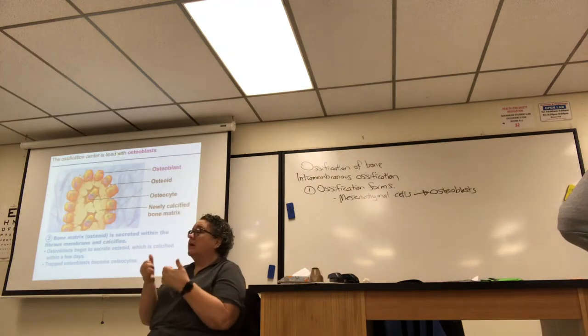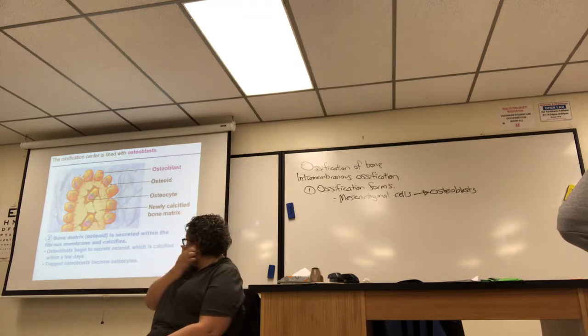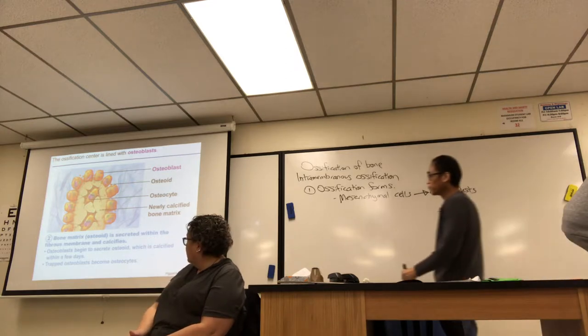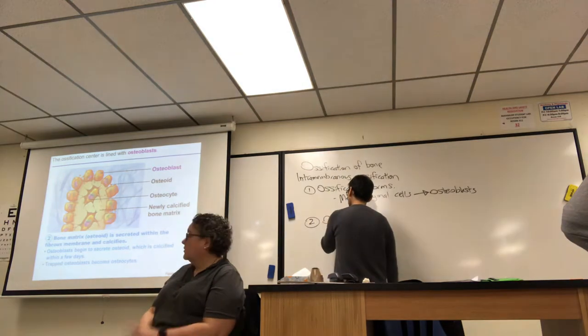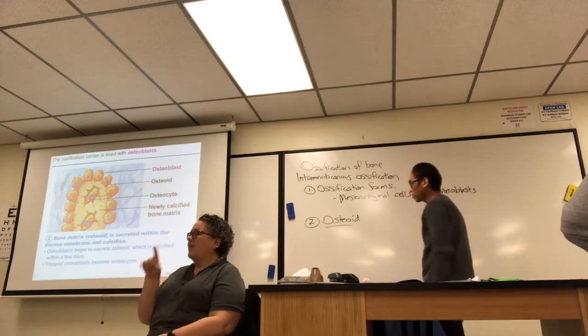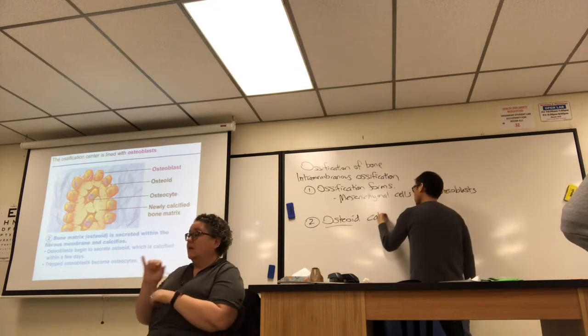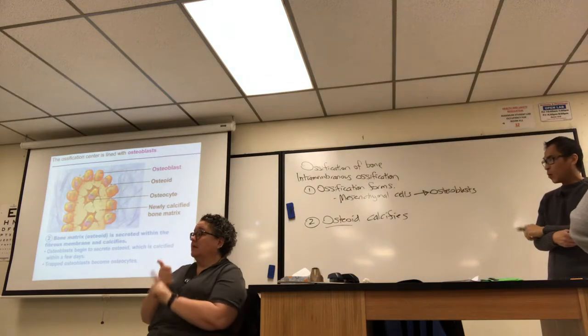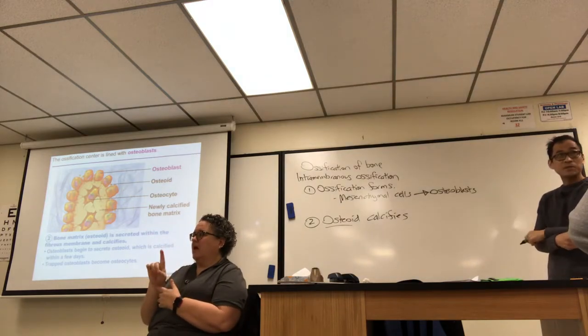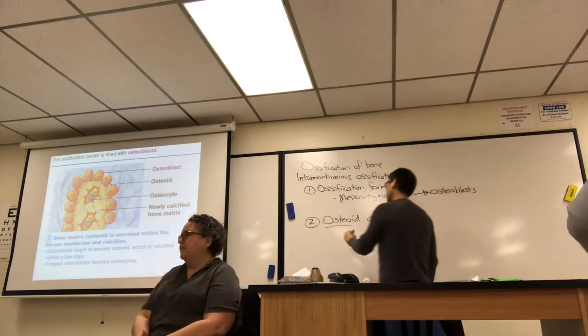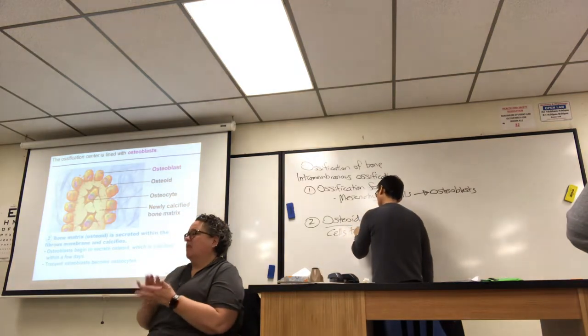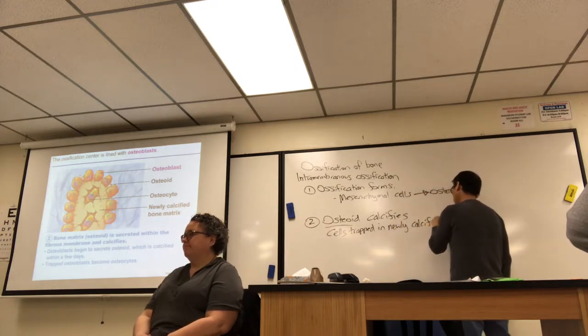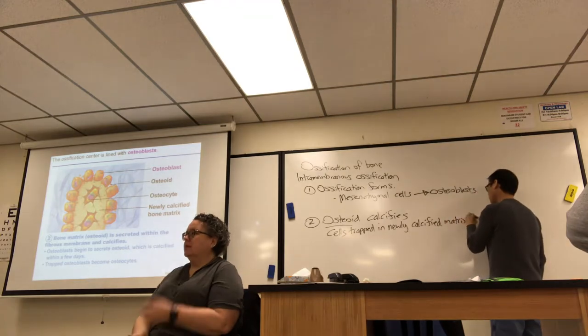So now you know you're going to get bone because the osteoblasts are there. So in the next frame they say, step two, bone matrix, osteoid, is secreted within the fibrous membrane and calcifies. Step two, get your osteoid, and we know that that's secreted by the osteoblasts. Osteoid calcifies. And that's what you see there. You see some bone formation. And the cells trapped within the newly calcified bone matrix become osteocytes.